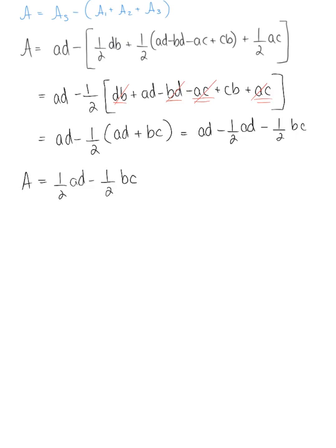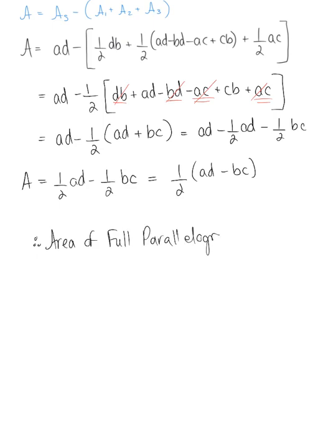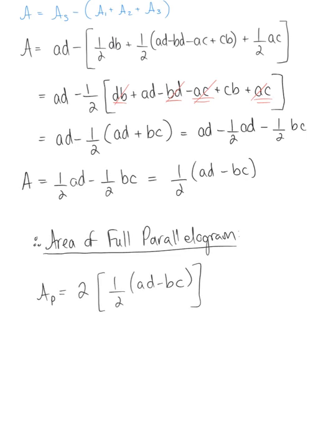This is just half the area of the parallelogram. The full area of the parallelogram is double this: 2 × (½AD − ½BC). The two's cancel, leaving AD − BC, which is exactly the determinant of matrix A.